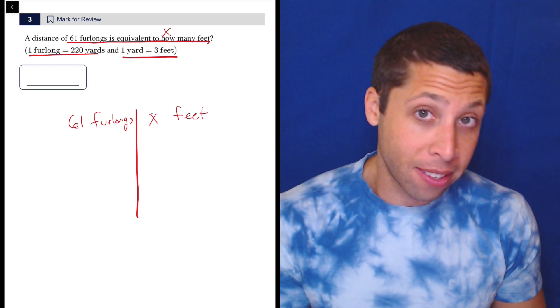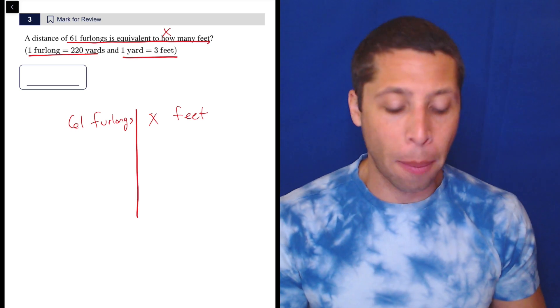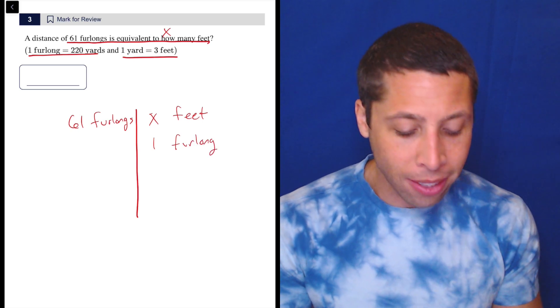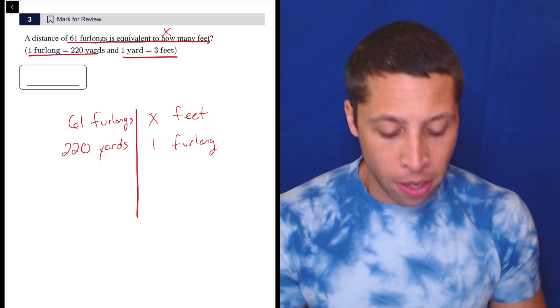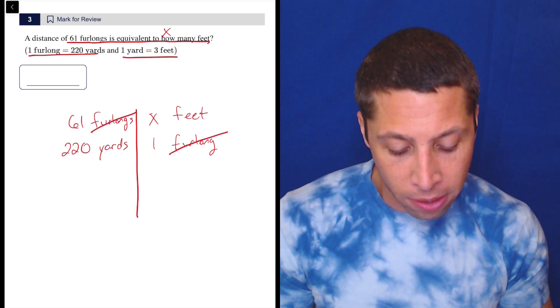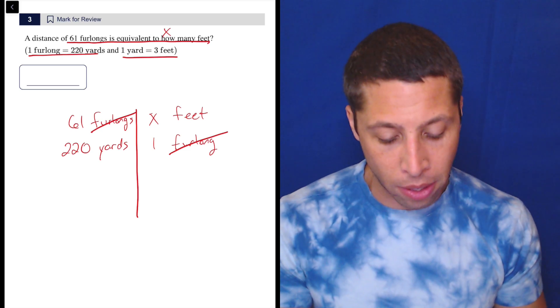Now I want to write that as the next line, but remember I have to flip it so that the units cancel each other out on opposite sides of the table. So one furlong is actually going to go on the right side and then I'm going to switch 220 to over here. And that's because we need to cross them out. So now we can cross out furlongs because there's a furlong on each side. We don't cross out the number. We only cross out the word.